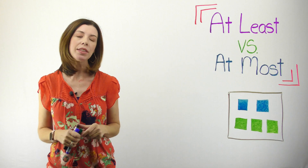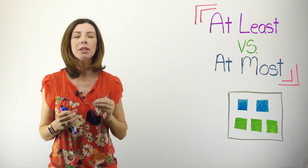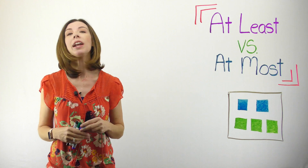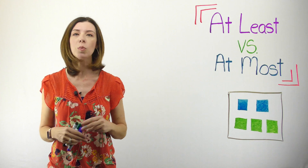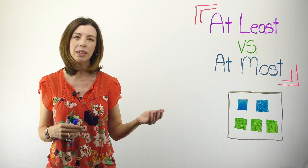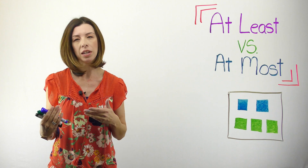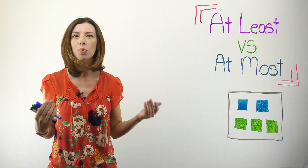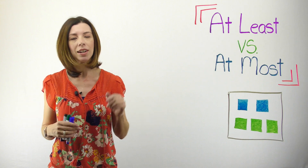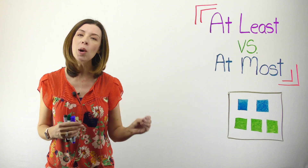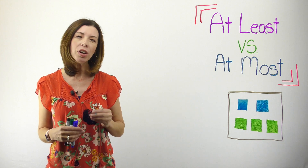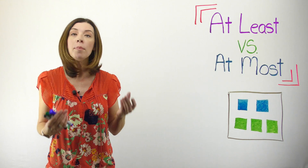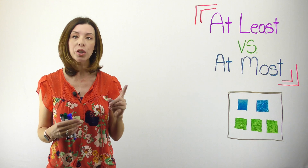The first thing we need to think about is what's the difference between at least versus at most. If I say you can have at least one cookie, what are the possibilities? You could have one cookie, but you could also have seven cookies, 12 cookies, 20 cookies — now we're talking. If I say you can have at most one cookie, then are you allowed to have two cookies? No, at most you can have one cookie.